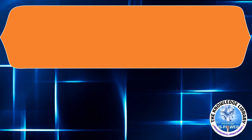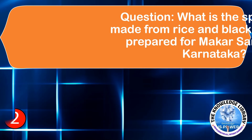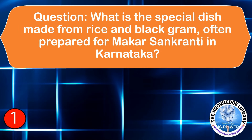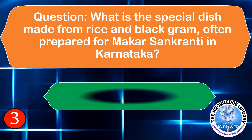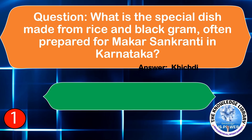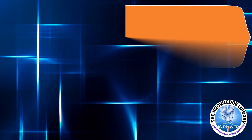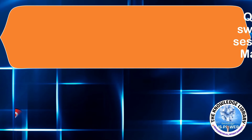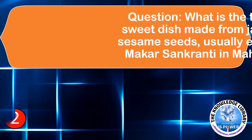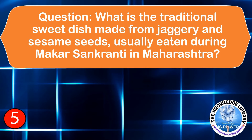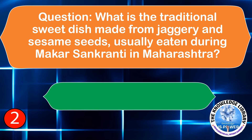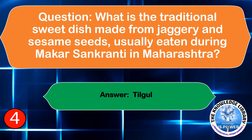The next question is: What is the special dish made from rice and black gram often prepared for Makar Sankranti in Karnataka? The answer is Khichdi. The next question is: What is the traditional sweet dish made from jaggery and sesame seeds usually eaten during Makar Sankranti in Maharashtra? The answer is Tilgul.